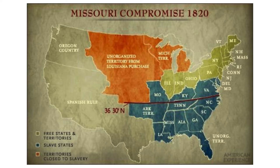So the Missouri Compromise is when Missouri wants to enter the Union as a slave state and people in the North say no. The compromise is that Maine — which breaks off from Massachusetts — becomes a free state, Missouri enters the Union as a slave state, and then this line is created called the Mason-Dixon line.